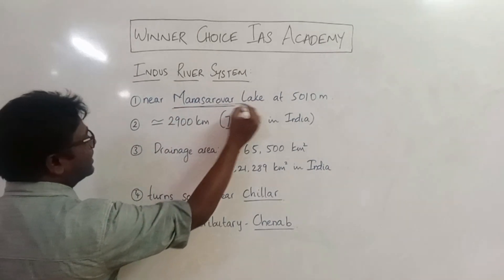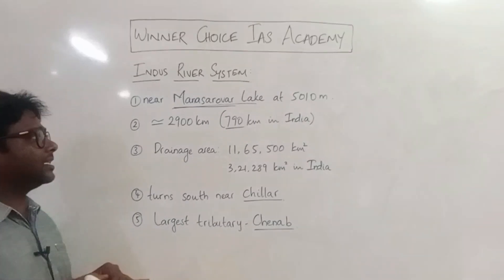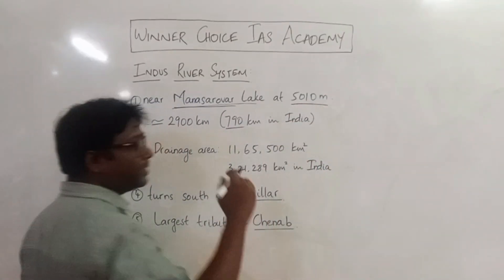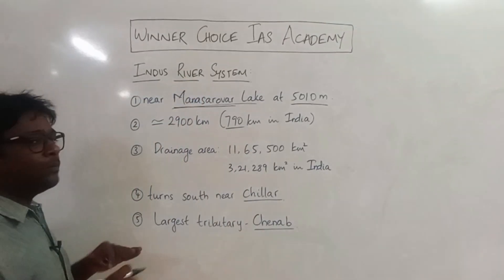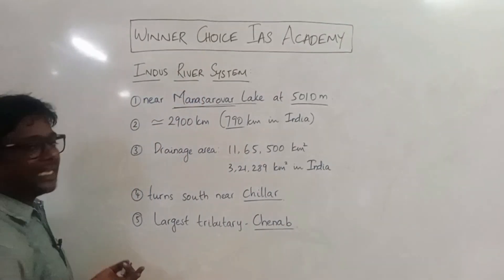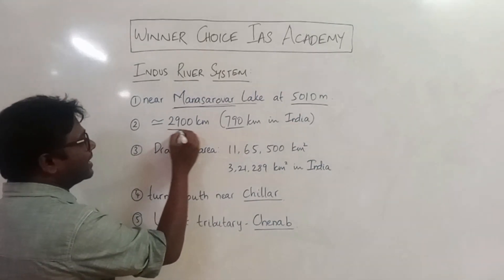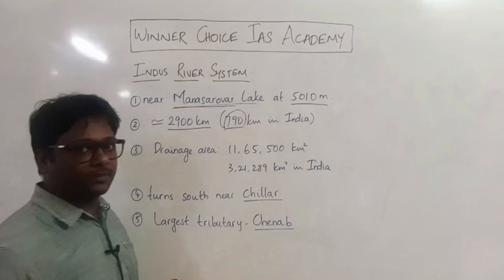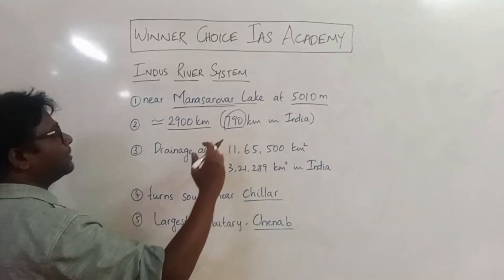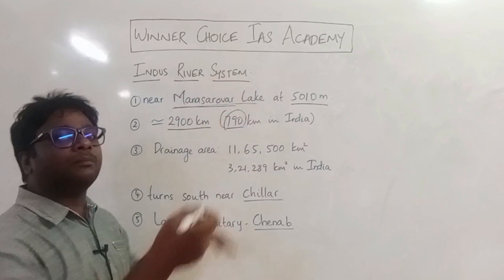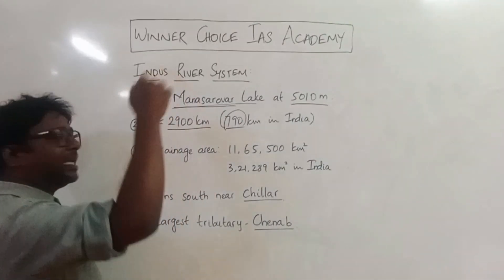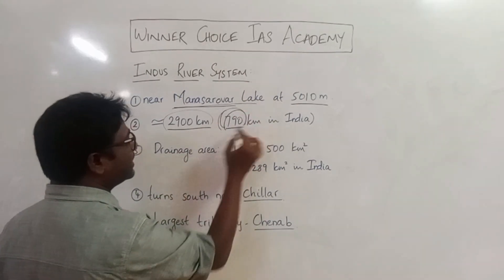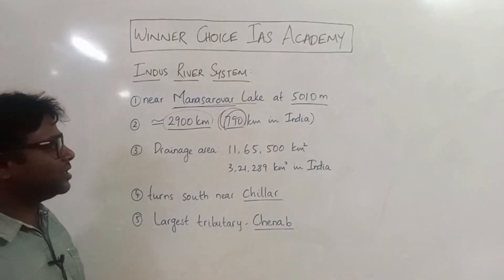The Indus River originates from a lake in Mansarovar area at a very high elevation. Its total length is 2,500 km, with about 7,100 km covered in India and 790 km within India specifically. It originates in Tibet, then flows into India and continues to Pakistan.